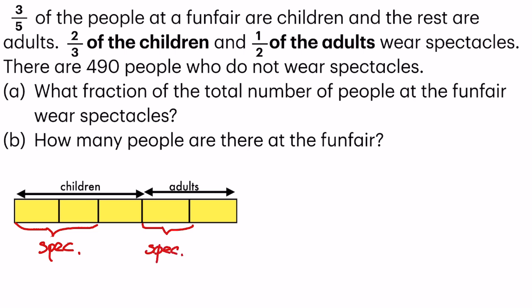And the next statement, there are 490 people who do not wear spectacles. So this 490 people equates to how many units? One, two. So two units is equal to 490. I'm going to write that down.